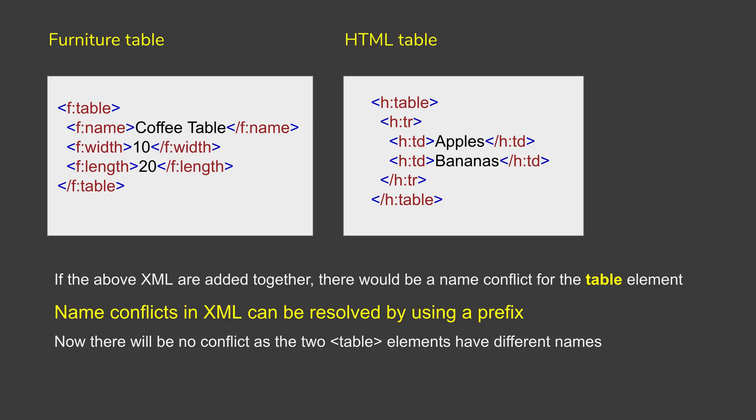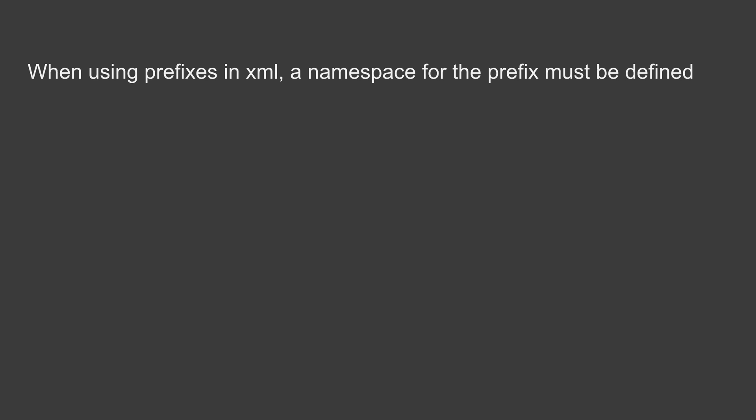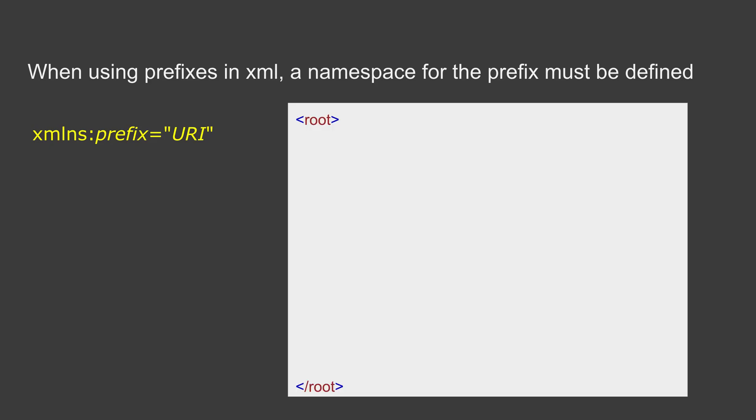Until now we have just talked about prefixes that help us resolve conflicts when we have common elements. We also need to understand about the xmlns, or XML namespace, attribute. Whenever we are using prefixes in our XML, a namespace for the prefix must be defined. The syntax is: xmlns colon whatever prefix we have used, equals a URI.